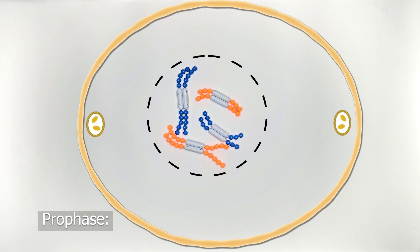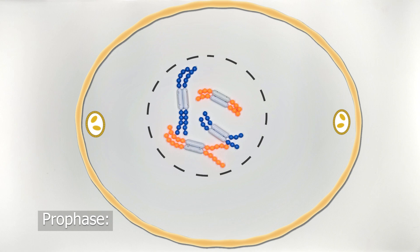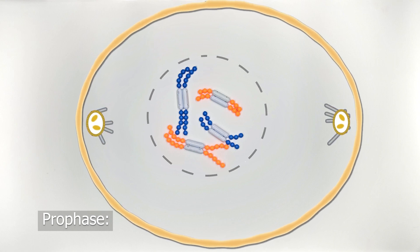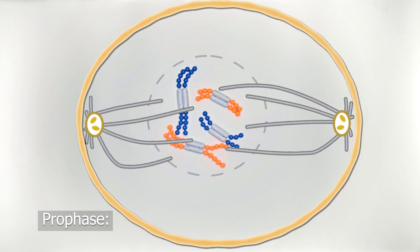The nuclear envelope is beginning to disappear, and we see the formation of the spindle apparatus from the centrosomes.